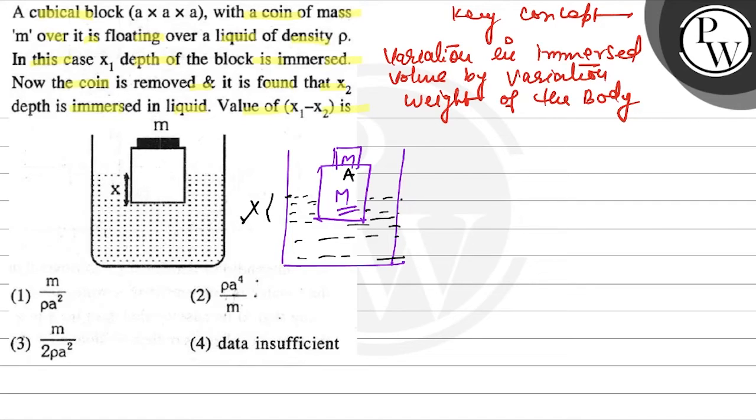Initially, M plus small m into g is equal to ρ Vmerg g. Capital M plus small m into g equals V immersed ρ g.